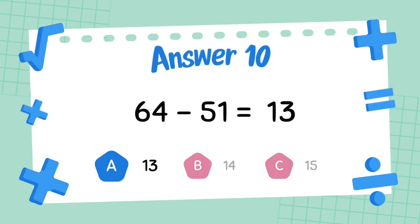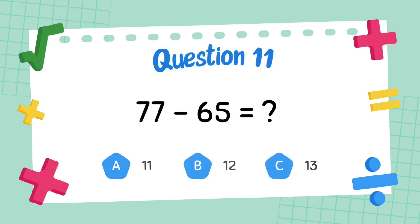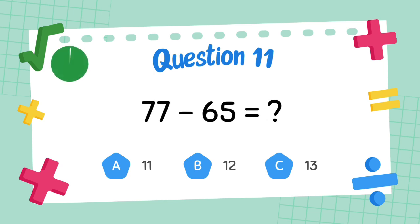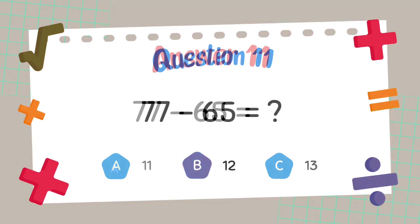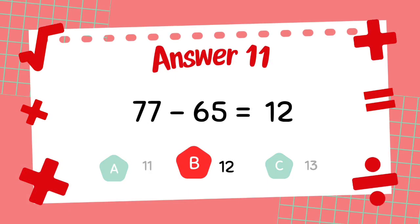What is 67 minus 65? The answer is 13. What is 77 minus 65? The answer is 12.